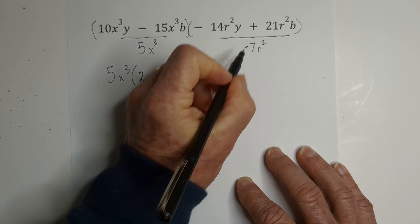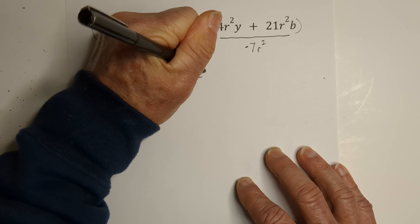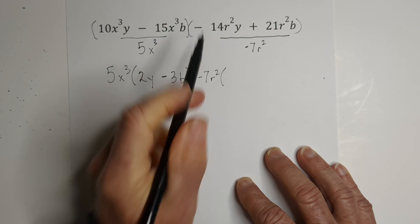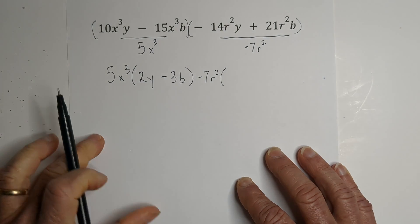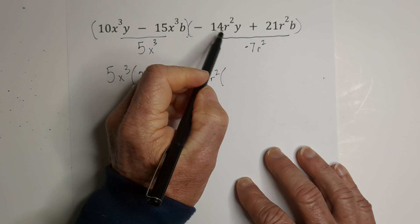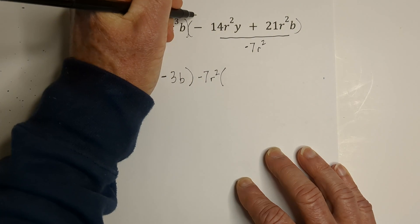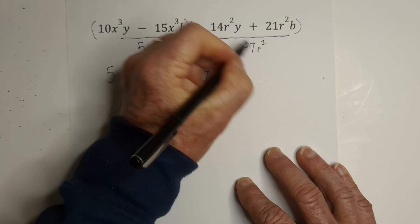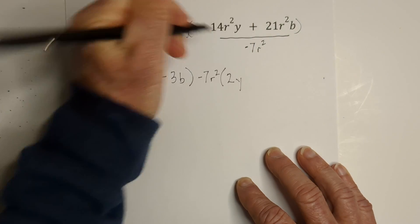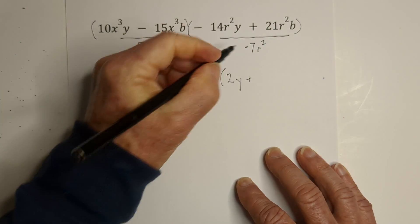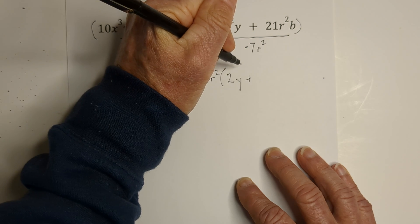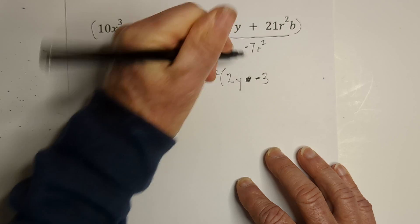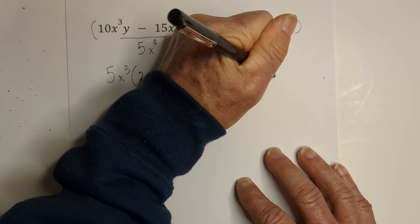Now we write the GCF out front. And notice how well we will at the end that this will factor out the negative. 7 goes into 14. That is 2 times because the negative and negative is a positive. The r squares cancel. That gives us a Y. Plus negative 7 goes into 21. Excuse me. It is not plus. It is a negative 3. R's cancel B.